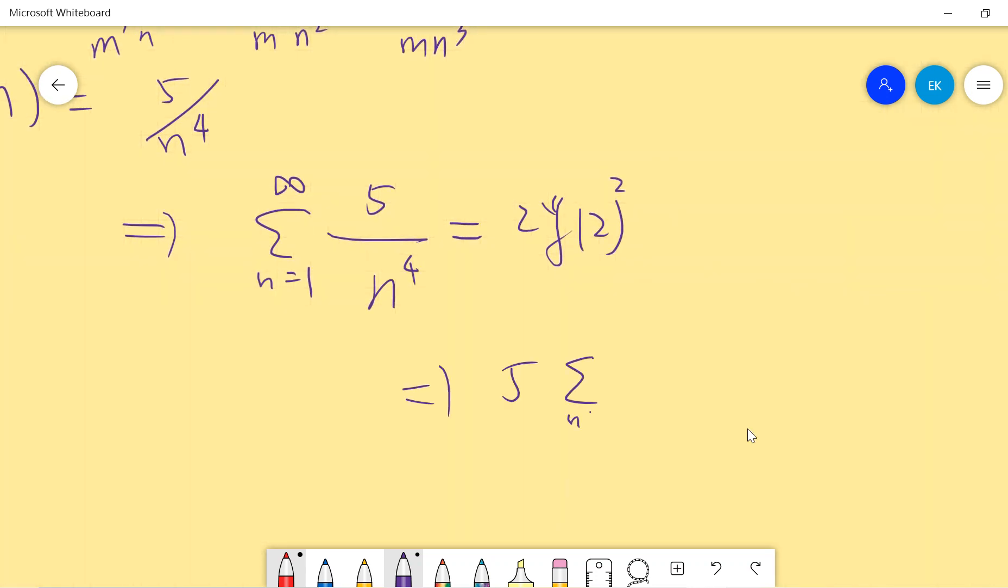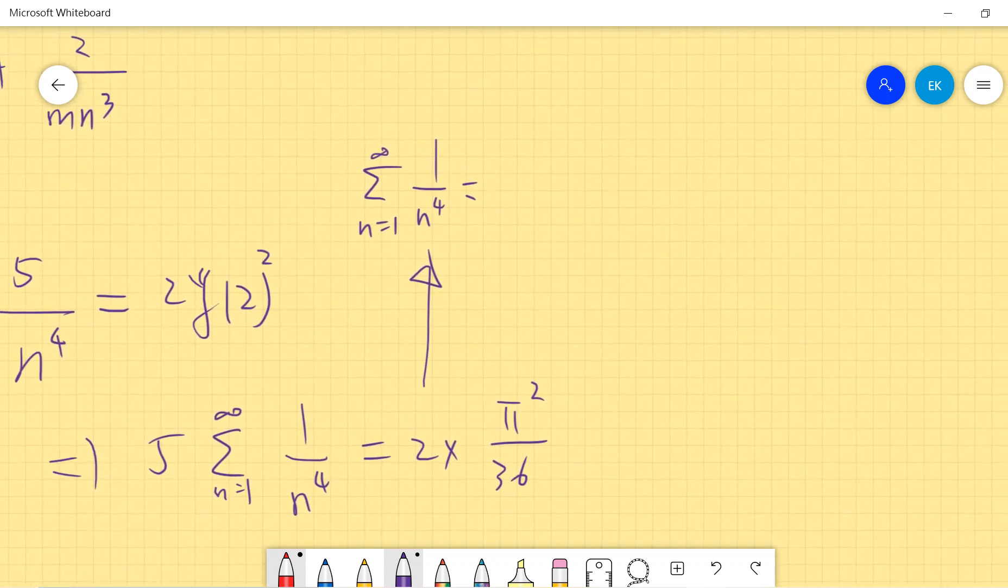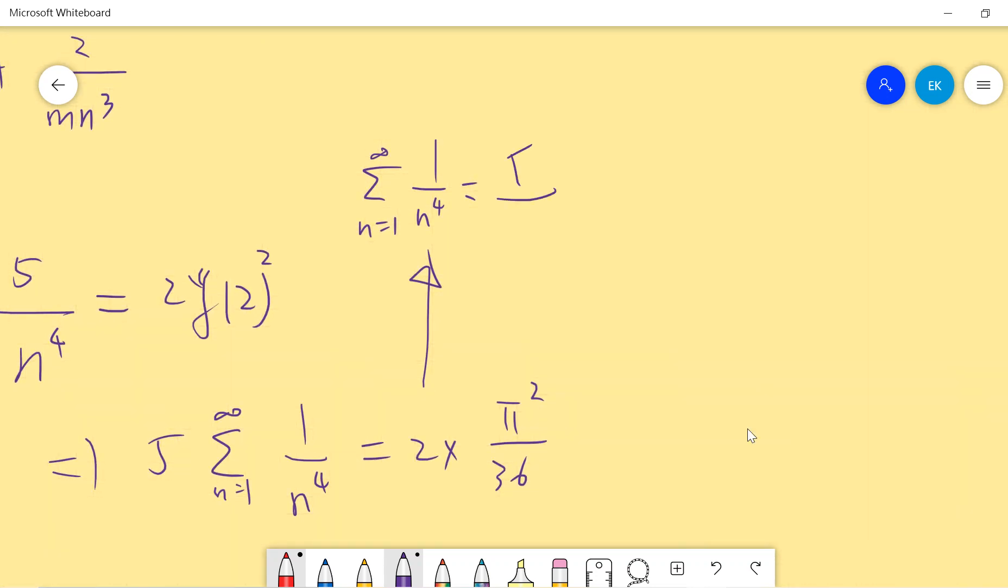That means 5 times the sum of 1 over n to the fourth equals 2 times pi squared over 6 squared. So we have the famous result: the sum of 1 over n to the fourth equals pi to the fourth over 90, because this is pi squared over 6 squared divided by 5.